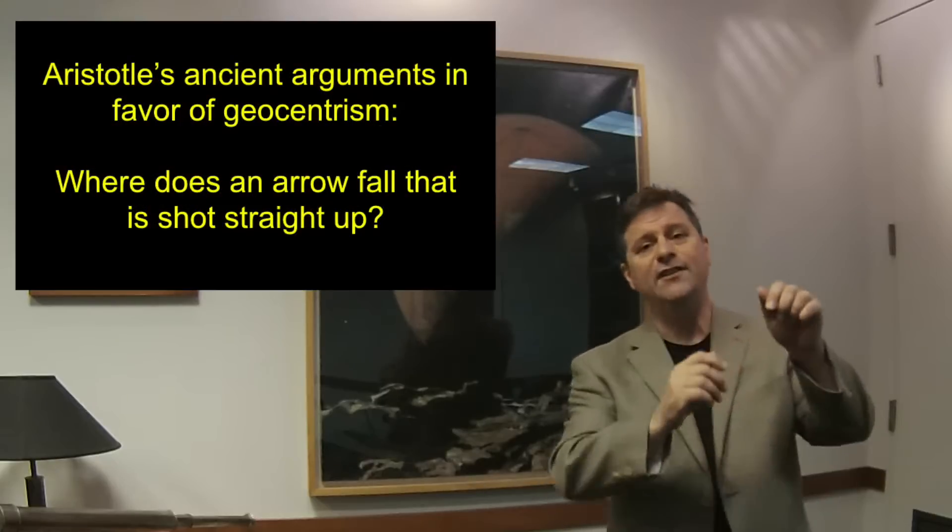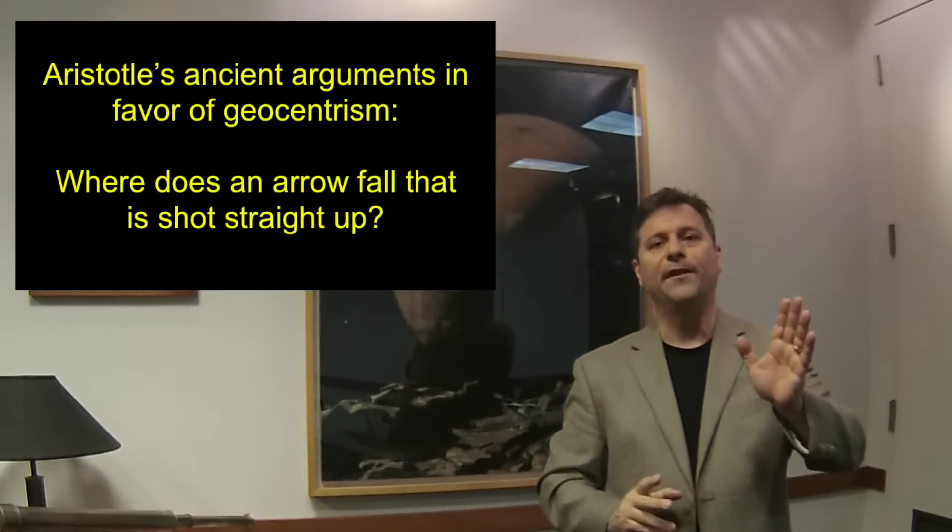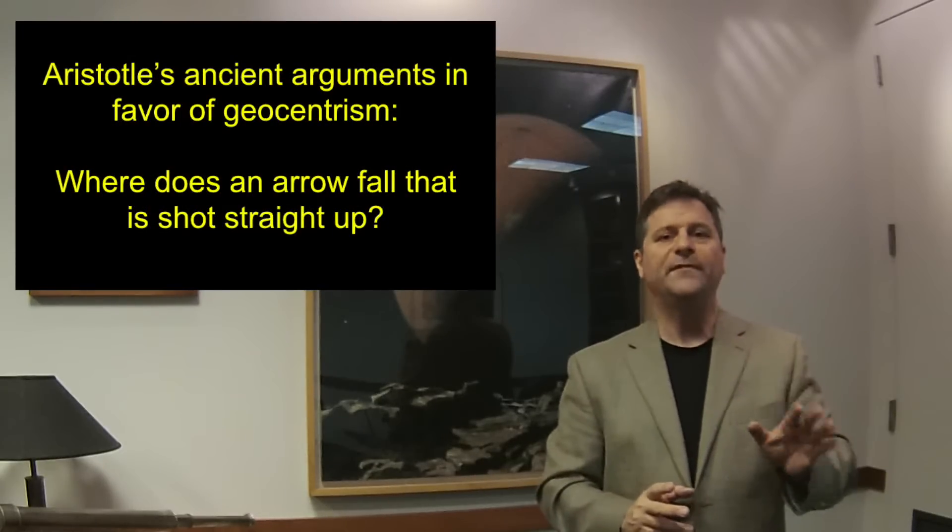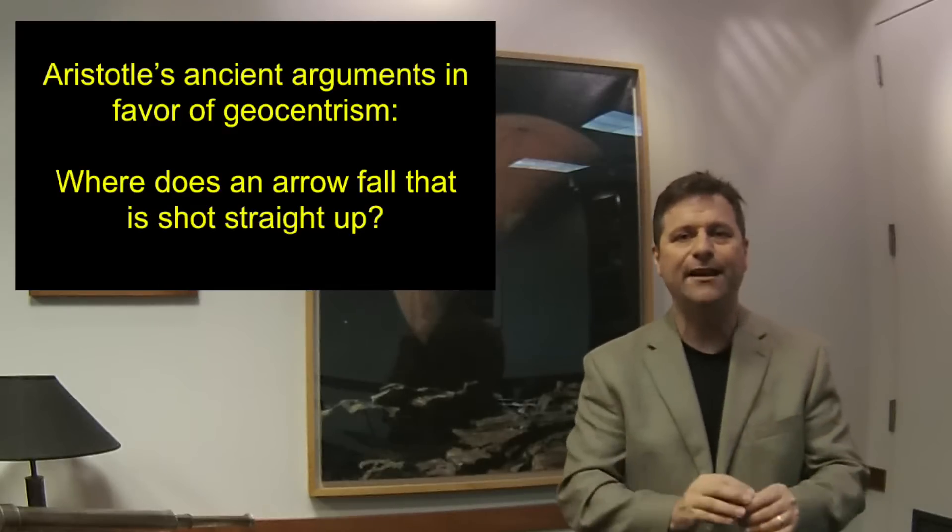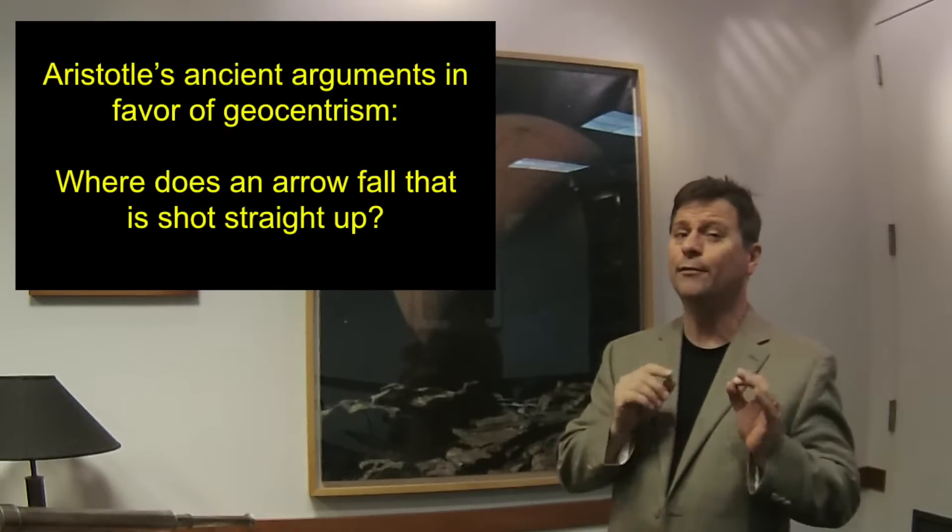Second, let's say you take an arrow and they had archers back then. You take an arrow and shoot it straight up. Where does the arrow fall? The arrow falls straight back down at your feet. If the earth were moving, then the earth should move out from underneath the arrow and fall to the ground. That's an interesting thought. Why doesn't it do that? It doesn't do that because the earth's not moving or so Aristotle thought.